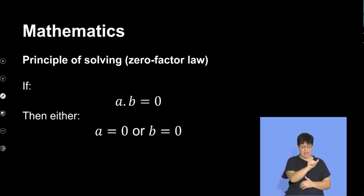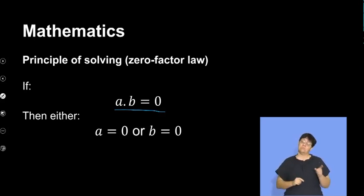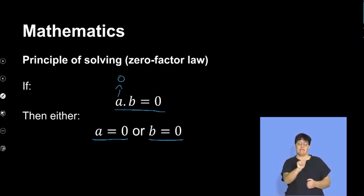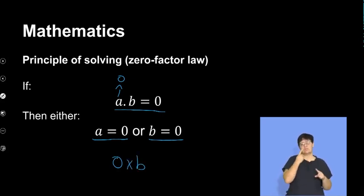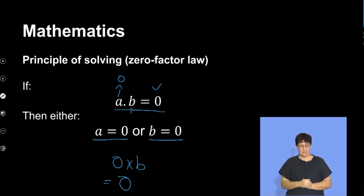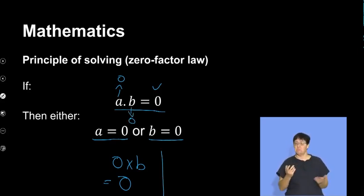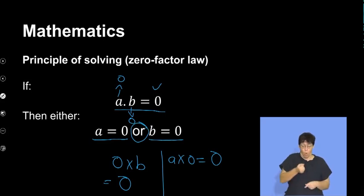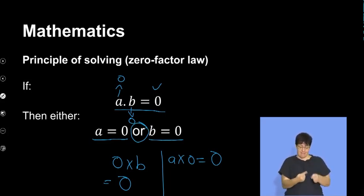...then either a will be equal to zero or b will be equal to zero. What does this really mean? If a is zero, it means I will have zero multiplied by b, which is definitely going to give me zero. Now if b is the one that is zero, it will be a multiplied by zero equal to zero, because a multiplied by zero is definitely zero. So that's why both of them will be solutions — but it is an OR situation, not AND, because if you say AND it's like you're saying they are intersecting, and they are not. It can either be this one or that one, that's why we use the OR.